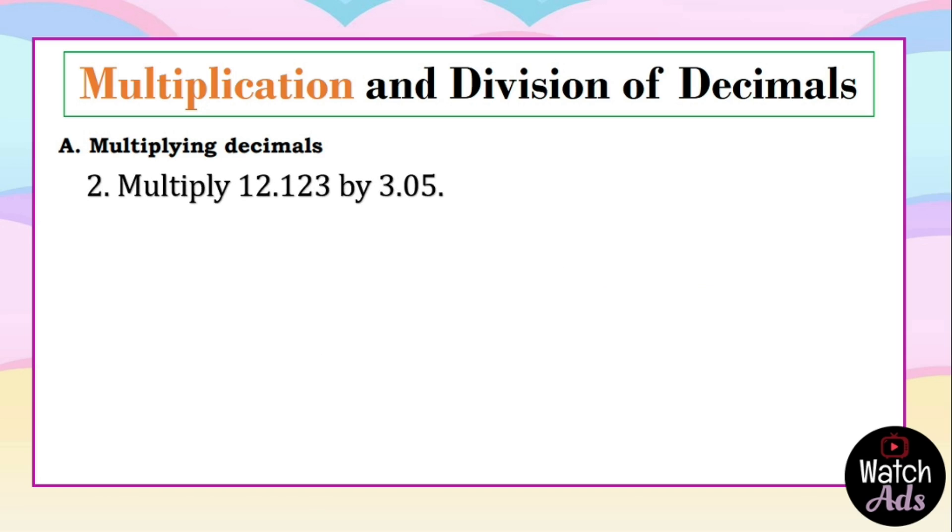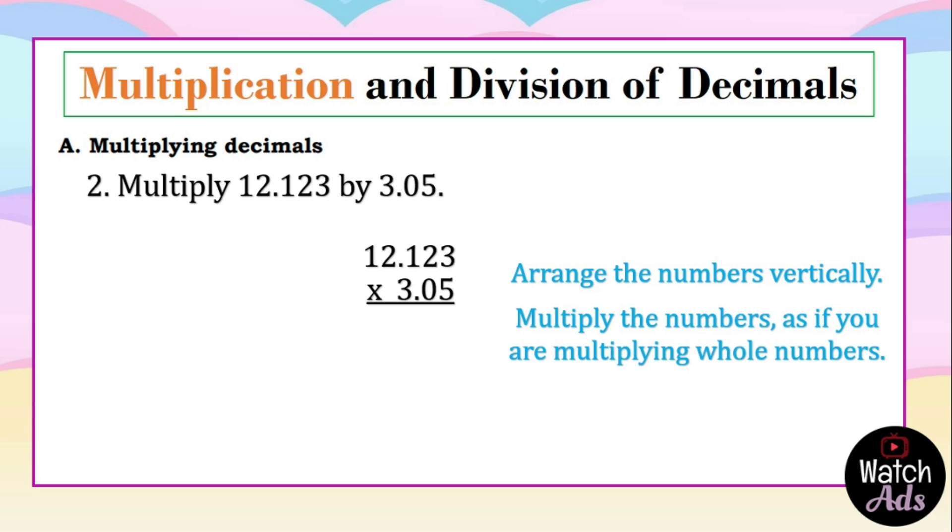Let's have another example. Multiply 12.123 by 3.05. Again, we arrange the numbers vertically. Then we multiply the numbers.